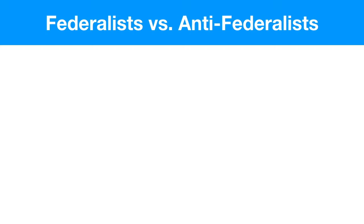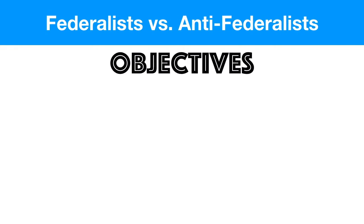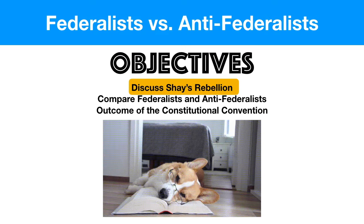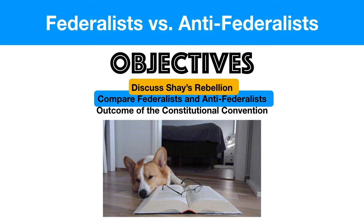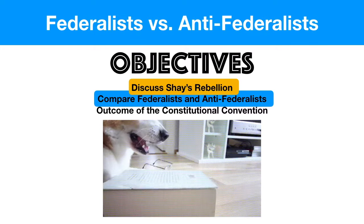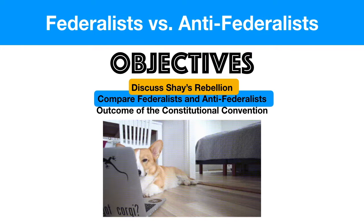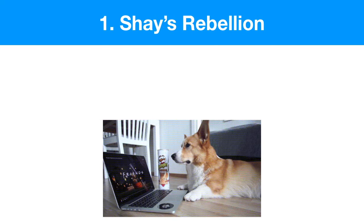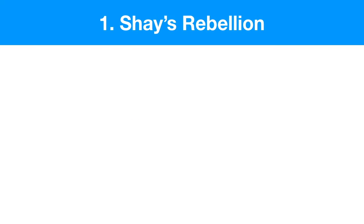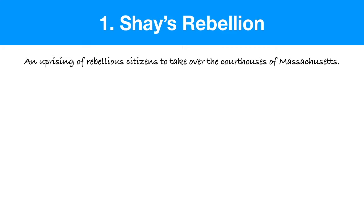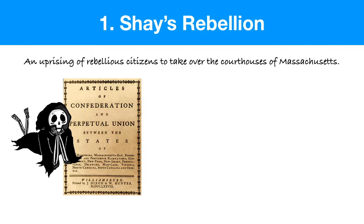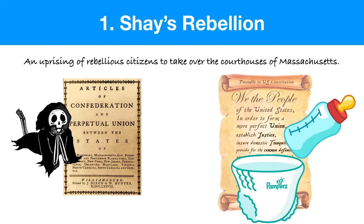In today's objectives we're going to be looking at Shays' Rebellion and why it was so important. We're also going to be comparing the Federalists and Anti-Federalists, who these guys are and how they thought. And then, what was the ultimate outcome of the Constitutional Convention. We're going to start with Shays' Rebellion because it's the event that led to the death of the Articles of Confederation and the birth of our new Constitution.